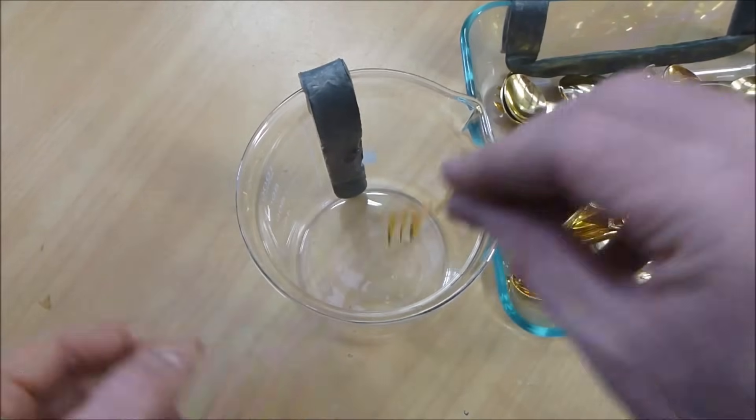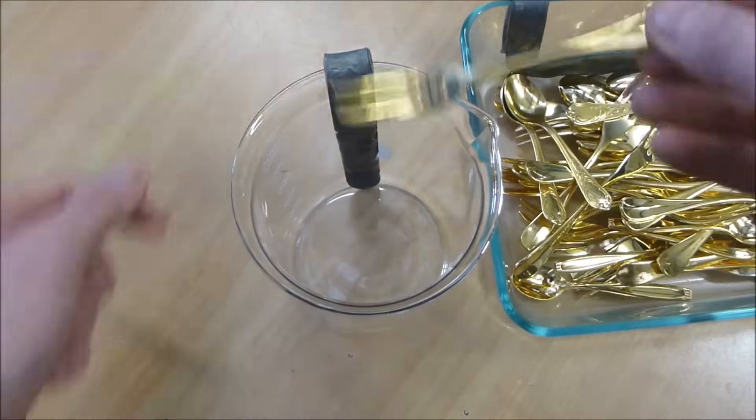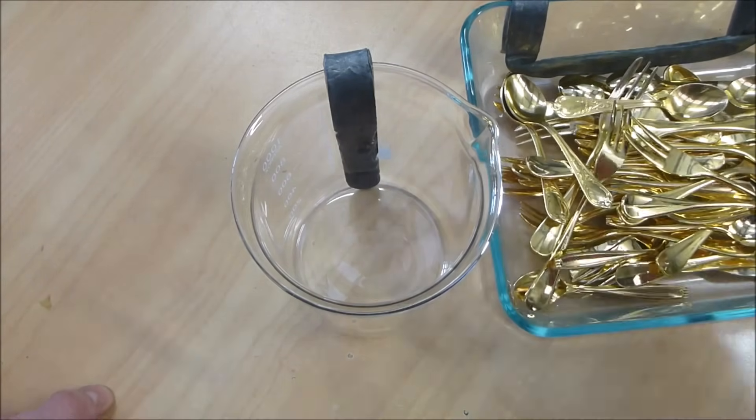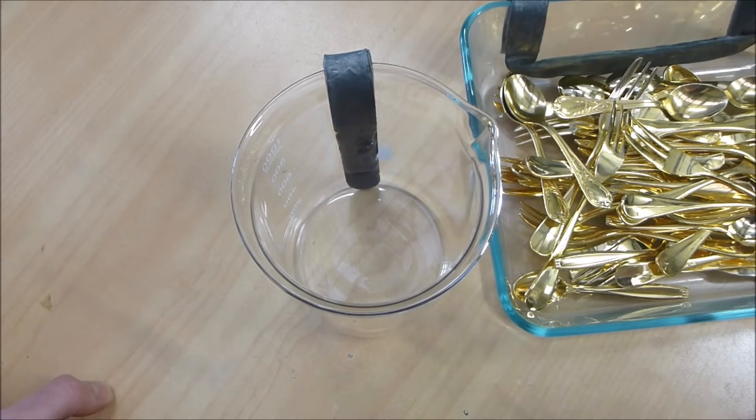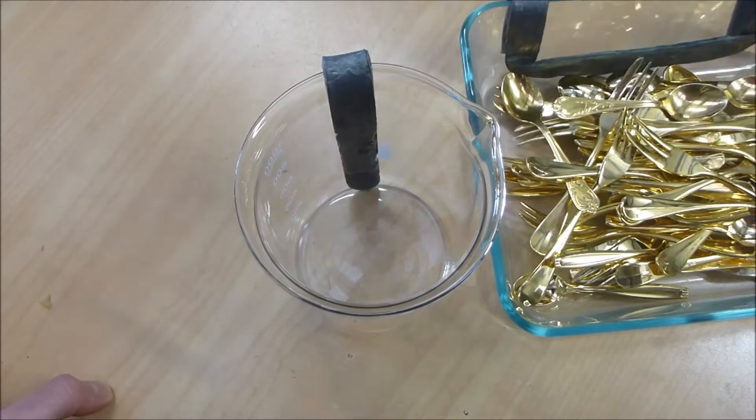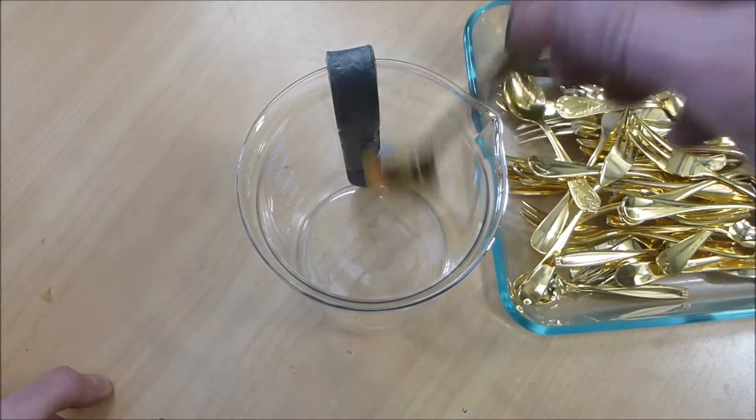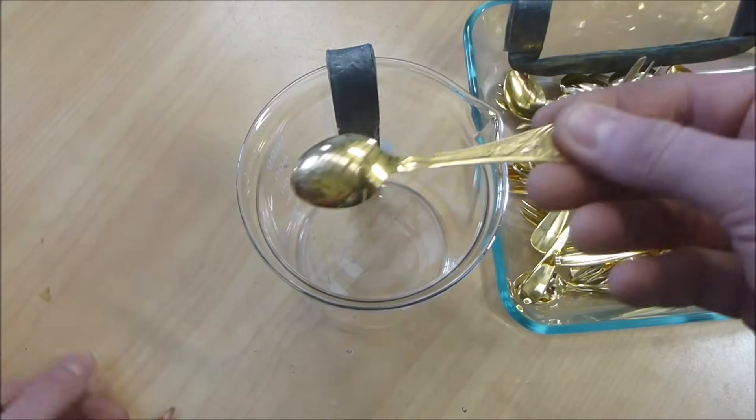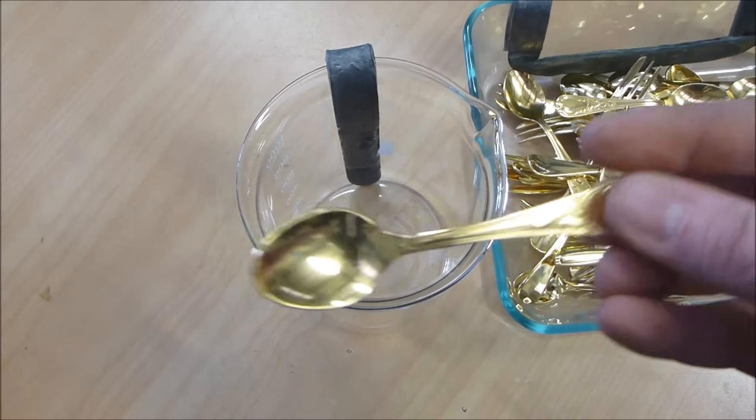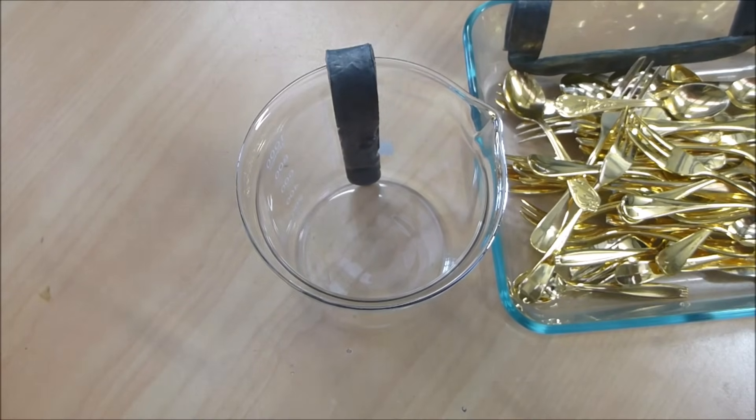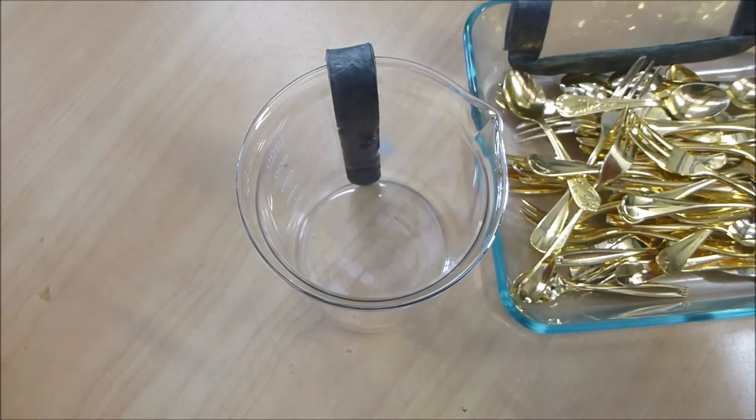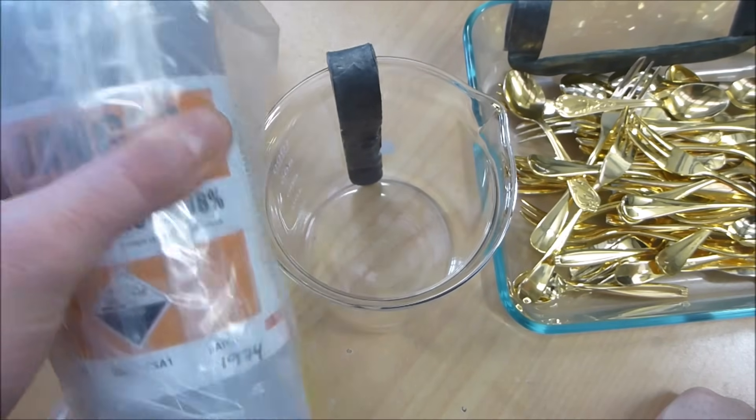Essentially the plan is going to be attach the positive side of a power source to the item to be deplated, negative to the piece of lead, dip it into the sulfuric acid, turn on the power supply while keeping an eye on the current flowing. You'll basically see kind of like a black cloud forming around the stuff that you're deplating, that's the gold that gets dissolved into solution but then immediately precipitates out as the black powder.